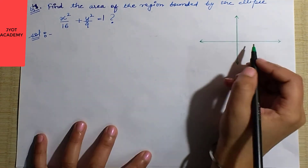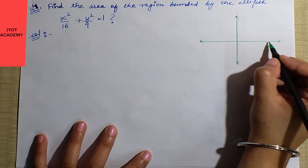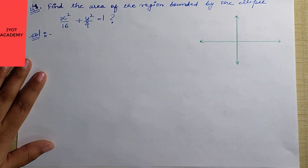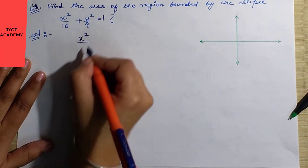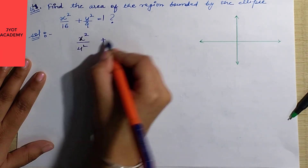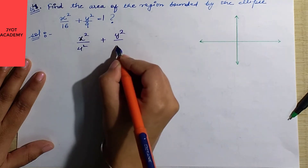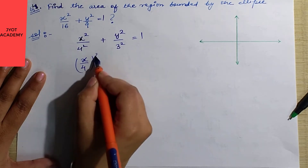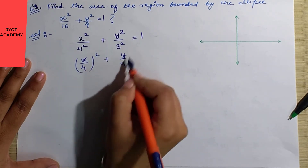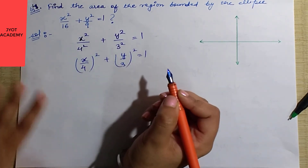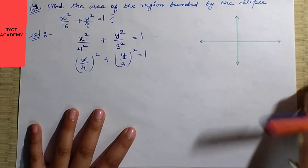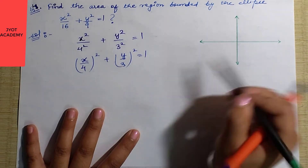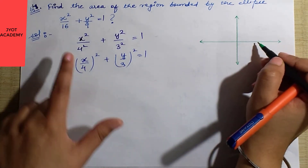Let's make the diagram. The ellipse equation gives us x upon 4 whole square plus y upon 3 whole square equals 1. So the exact point on the x-axis is 4 and on the y-axis is 3. Mark these values in your figure.